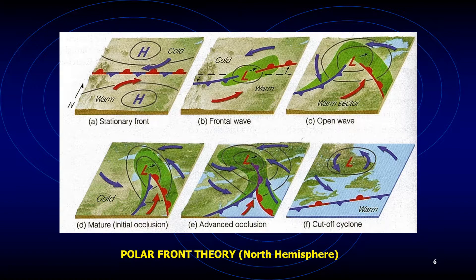As the center of the intense storm system shown in part E gradually dissipates, cold air now lies on both sides of the occluded front. The warm sector is still present but far removed from the center of the storm. Without the supply of energy provided by the rising warm moist air, the old storm system dies out and gradually disappears, as shown in part F.